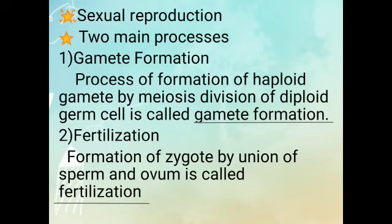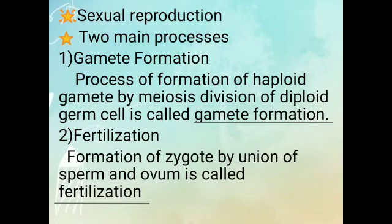Sexual Reproduction. Two main processes of sexual reproduction. First: Gamete Formation — the process of formation of haploid gametes by meiosis division of a diploid germ cell is called gamete formation. Second: Fertilization — formation of a zygote by union of sperm and ovum is called fertilization.